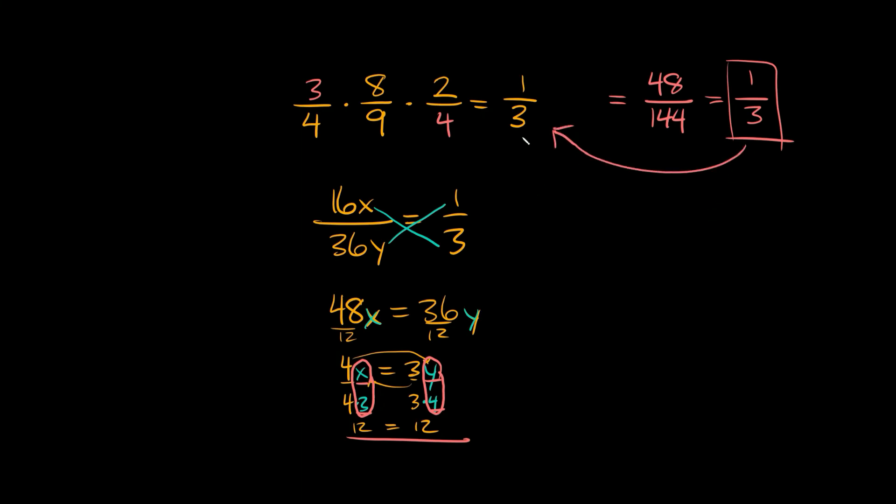So then we get back to the answer that we were looking for or that we were given, one third. So that means the two numbers that we got, x is equal to 3 and y is equal to 4 were correct.